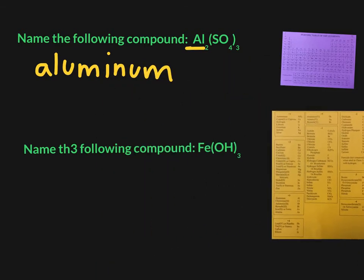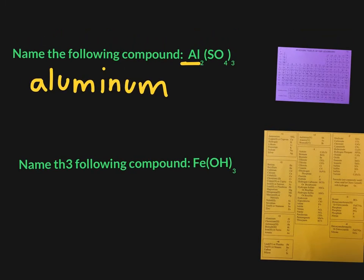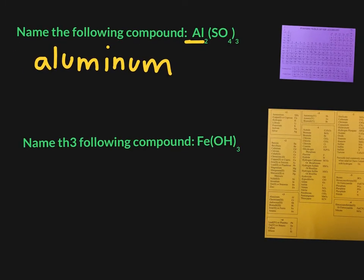So we name this simply aluminum sulfate. It's literally that simple. Let's take a look at the second example, Fe(OH)₃.